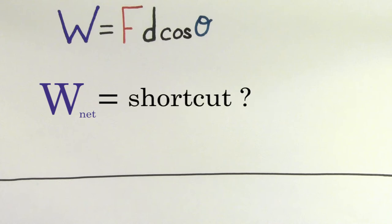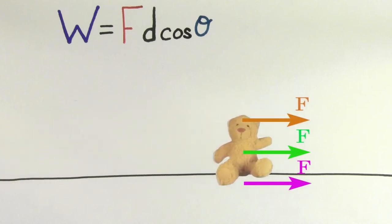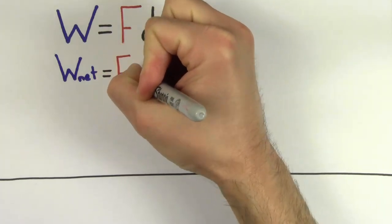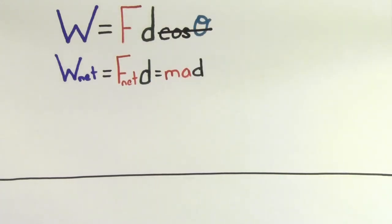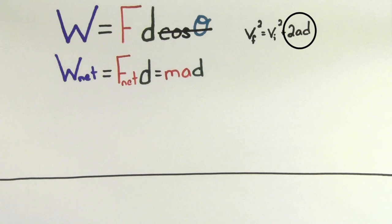There's actually a trick to figuring out the net work done on an object. To keep things simple, let's assume that all the forces already lie along the direction of the displacement, so we can get rid of the cosine theta term. Since we're talking about the net work done on an object, I'm going to replace F with the net force. We know that the net force is always equal to mass times acceleration, so we can replace F net with M times A. So the net work equals mass times acceleration times displacement. I want to write this in terms of velocities, so I'll recall a 1D kinematics equation: the final velocity squared equals the initial velocity squared plus 2 times the acceleration times the displacement.